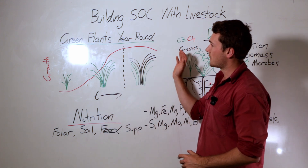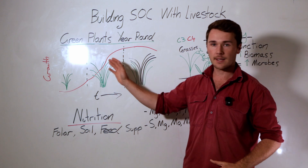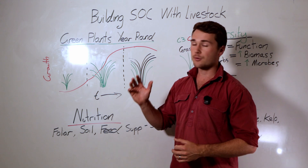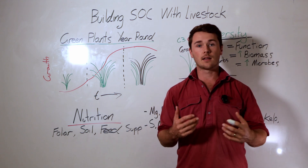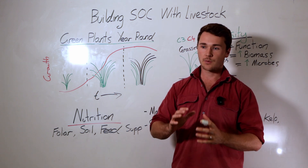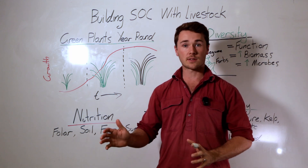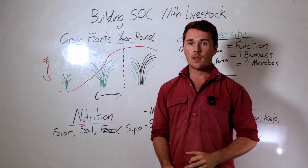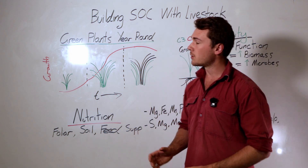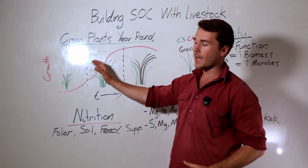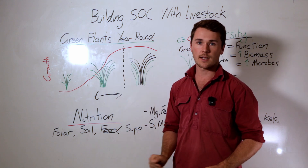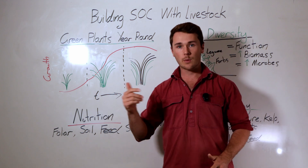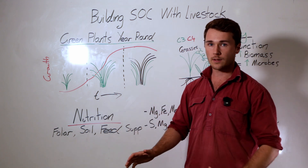The first principle is we want to maintain green plants all year round. In a livestock management system we'll typically have perennial pastures, which makes things easier — we don't have dead spots where we have nothing growing or bare soil. The reason we want green plants all year round is to ensure photosynthesis is happening all year round so that we're feeding our microbes and fungi.